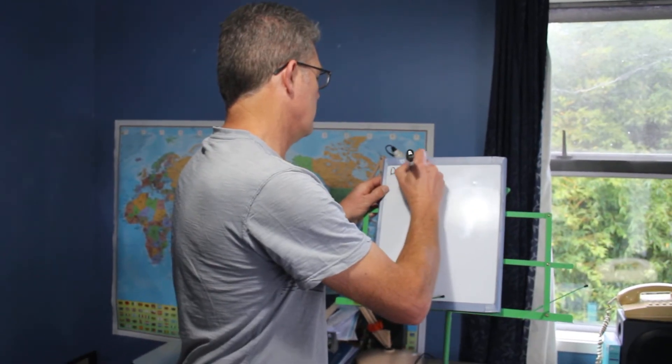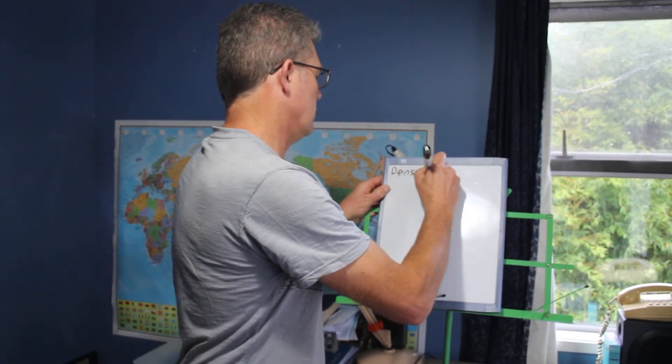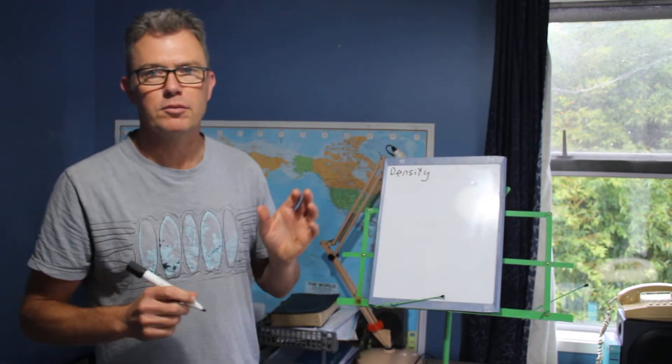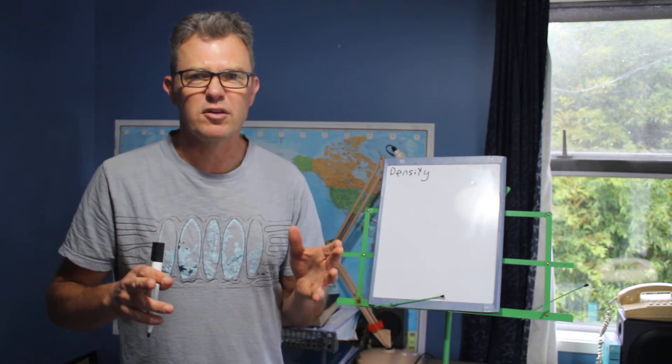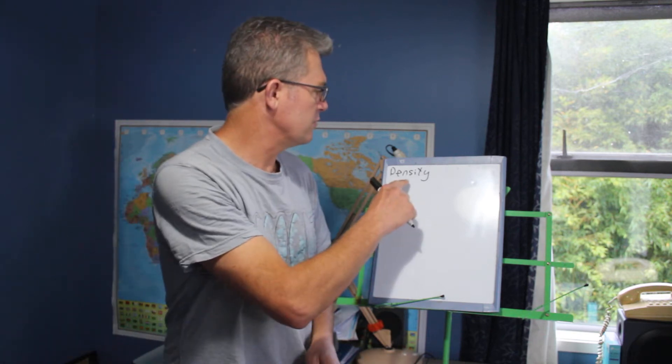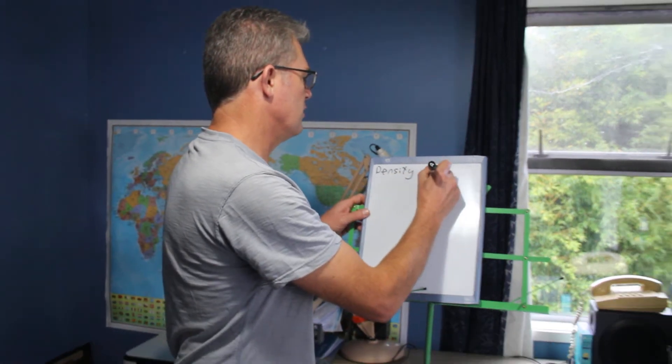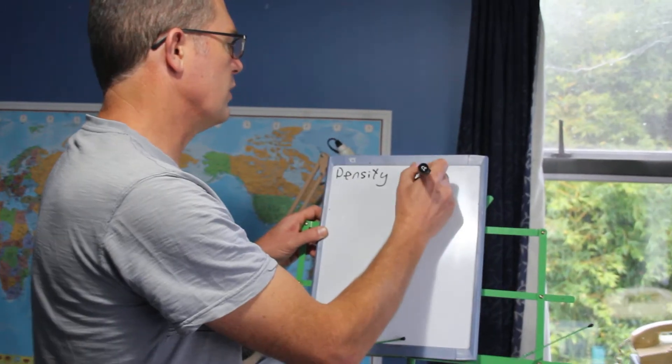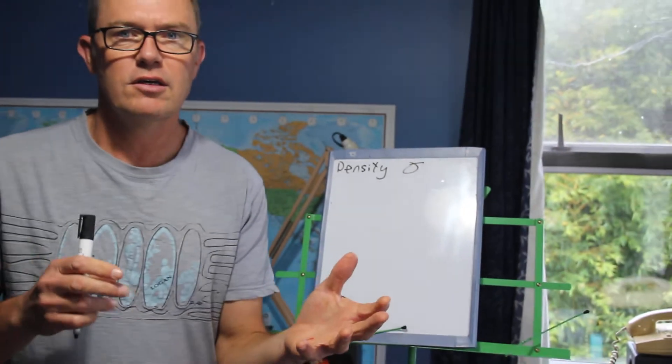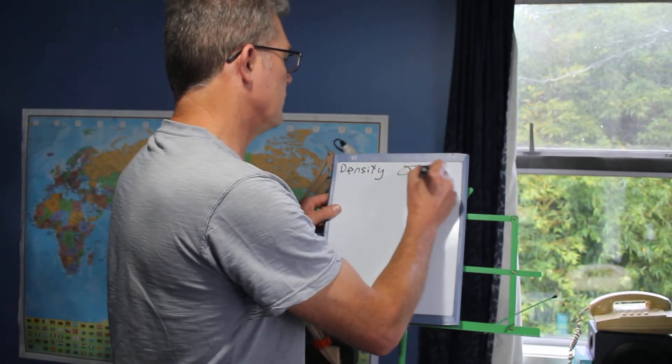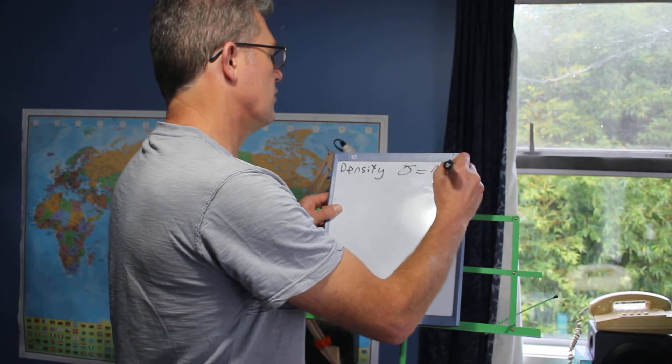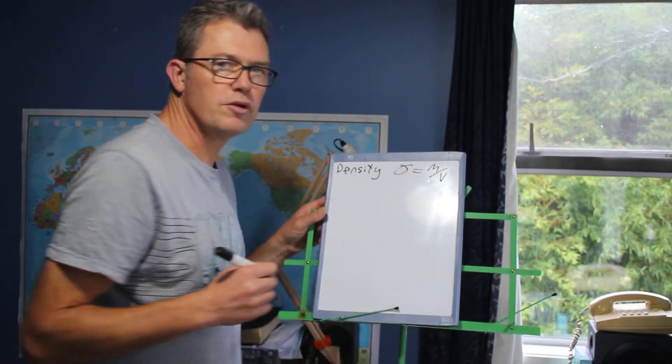Density. What does it mean? Some days you feel a bit dense. That's got absolutely nothing to do with the technical definition for density. Density is the symbol, this funny little symbol here. Density is just the mass divided by the volume. So as a formula, we say density equals mass divided by volume. Pretty simple really.